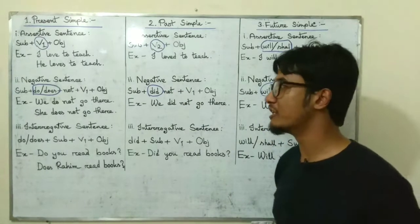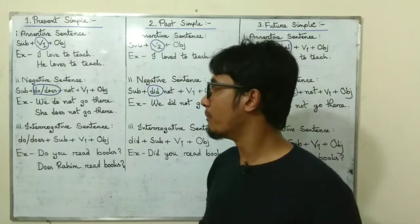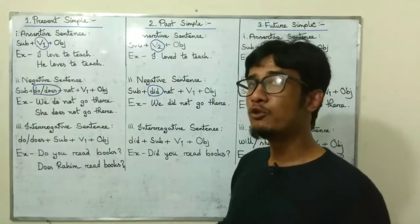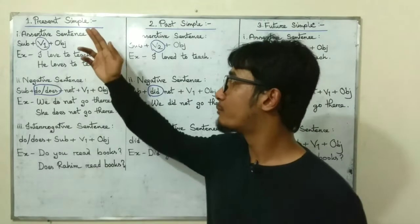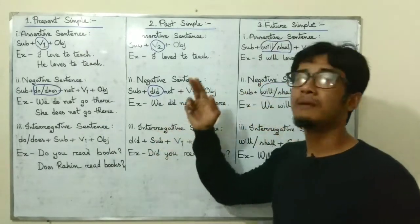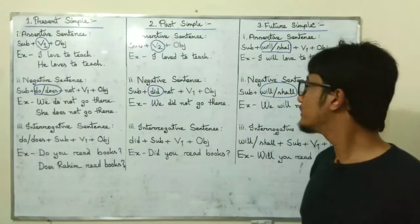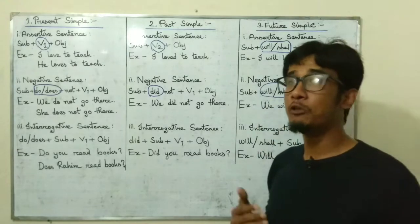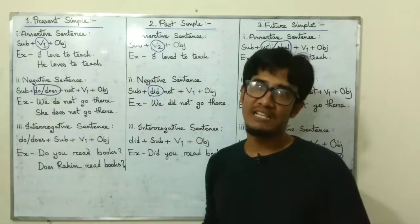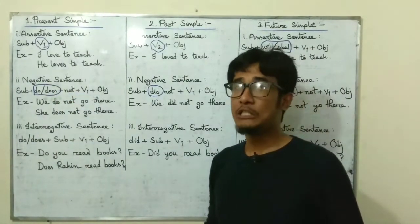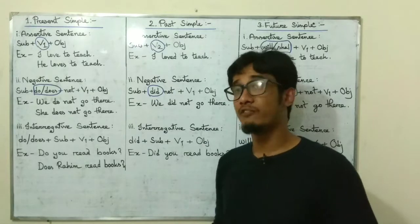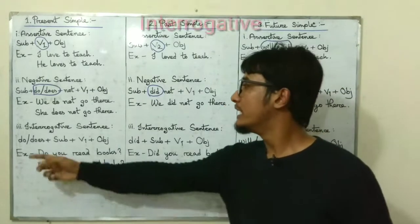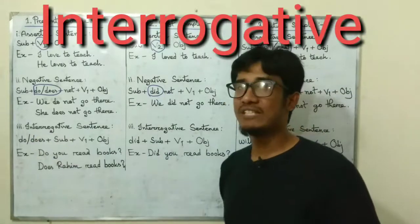No other changes — only if you can remember using these auxiliary verbs: do or does in present simple, did in past simple, and will or shall in future simple, you will be able to make negative sentences that you can use in your day-to-day conversation. And the last one: the interrogative sentence.